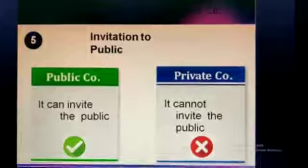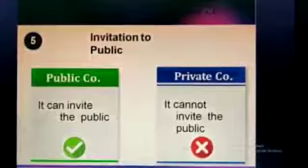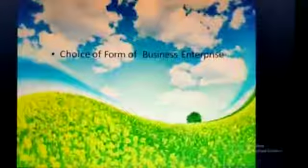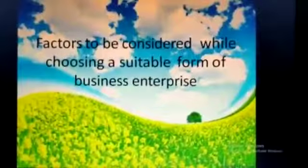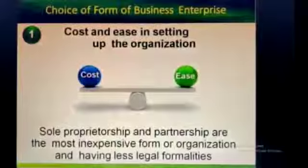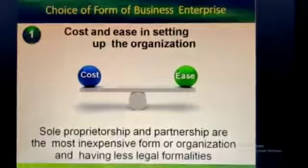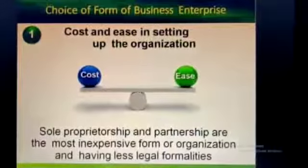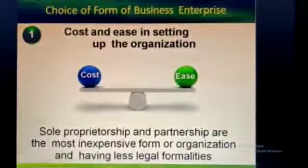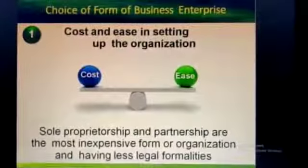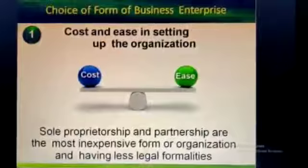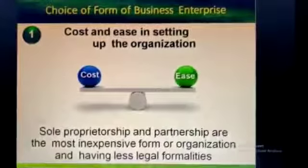After studying various forms of business organization, each form has its merits as well as limitations. So which form of organization should be chosen? Here are some factors to consider while choosing a suitable form of business organization. The first factor is cost and ease in setting up the organization. The first and foremost consideration is the ease and cost with which it can be formed. Sole proprietorship and partnership are the most inexpensive forms with fewer legal formalities. In cooperative societies and companies, registration is compulsory and formation is a very complex task. So according to this consideration, sole proprietorship is the preferred form.